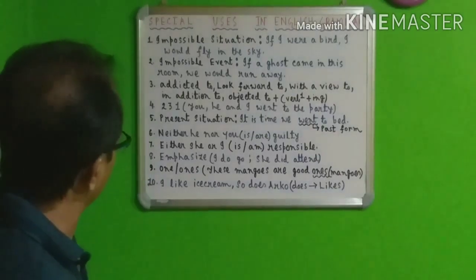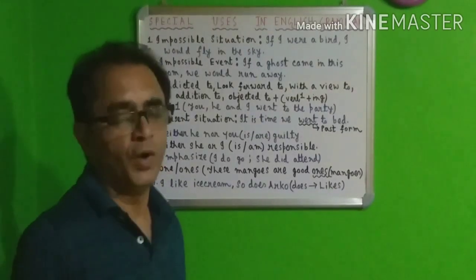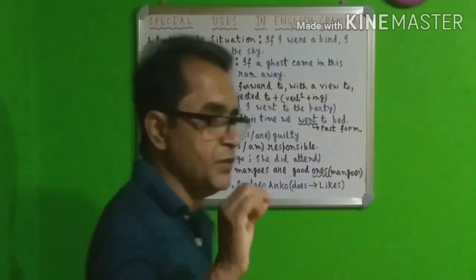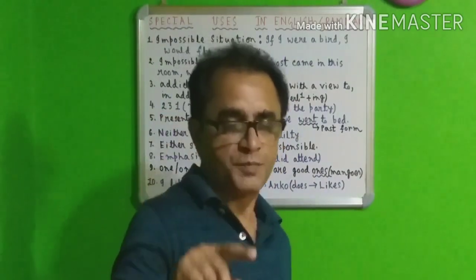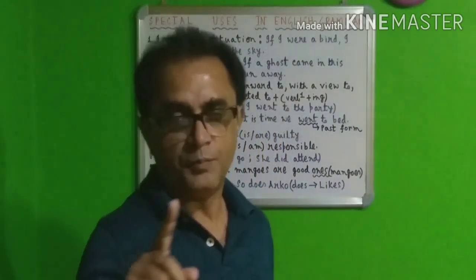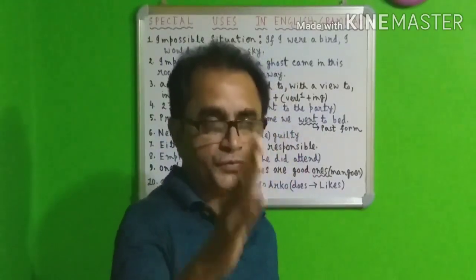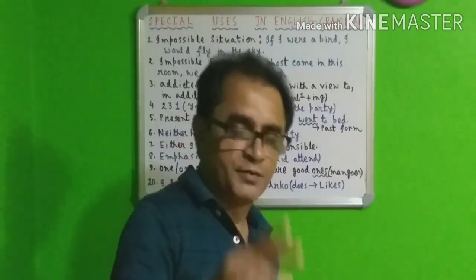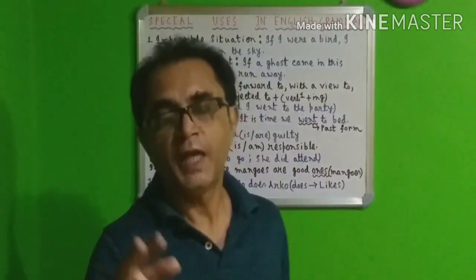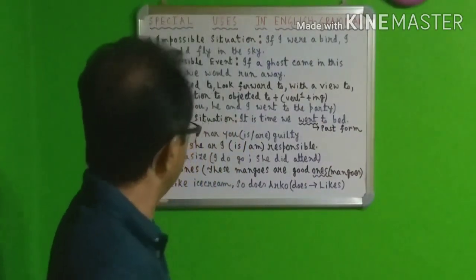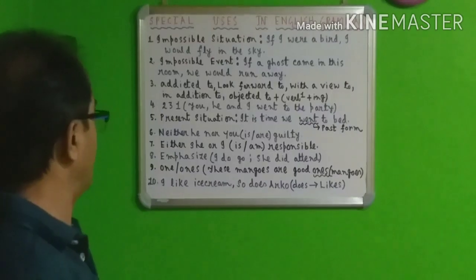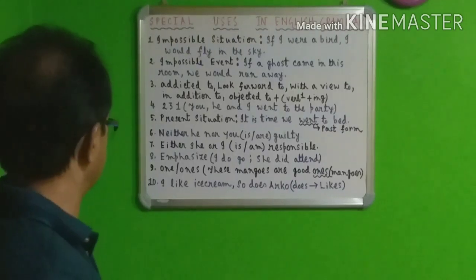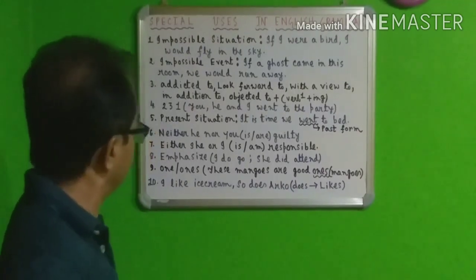Coming to number four. I have written on the board: 2, 3, 1. What do these numbers mean? If you find in a sentence the first person, second person, and third person together, you cannot write 'I, you, and he.' You have to remember: the formation should be second person, third person, and then first person. So the sentence will be: 'You, he, and I went to the party.' Remember: 2, 3, 1.